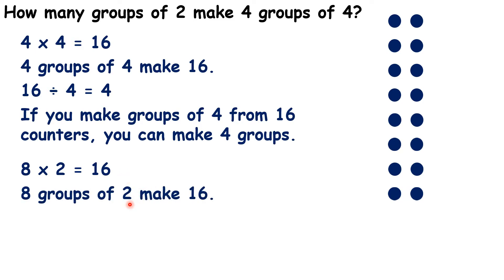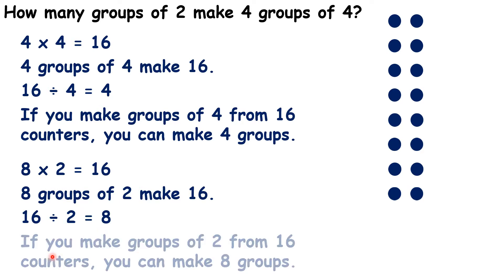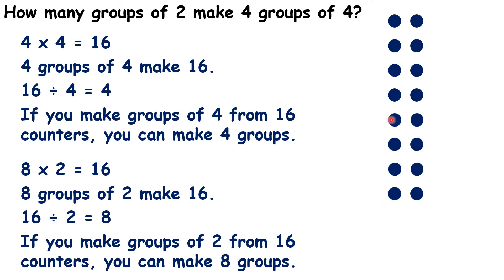So you could write what we can see in our array now as eight times two. What we really worked out here is that 16 divided by two is eight, because if you make groups of two from 16 counters, you can make eight groups.